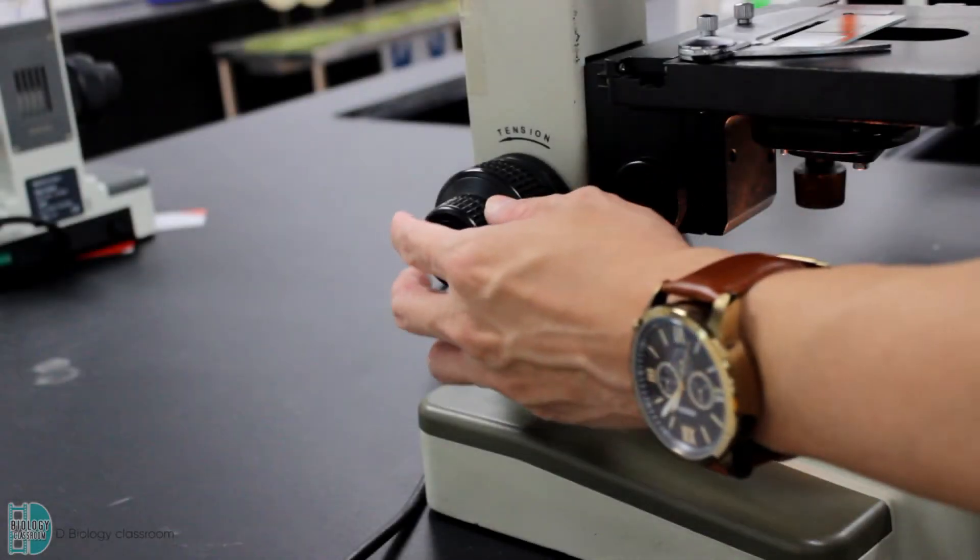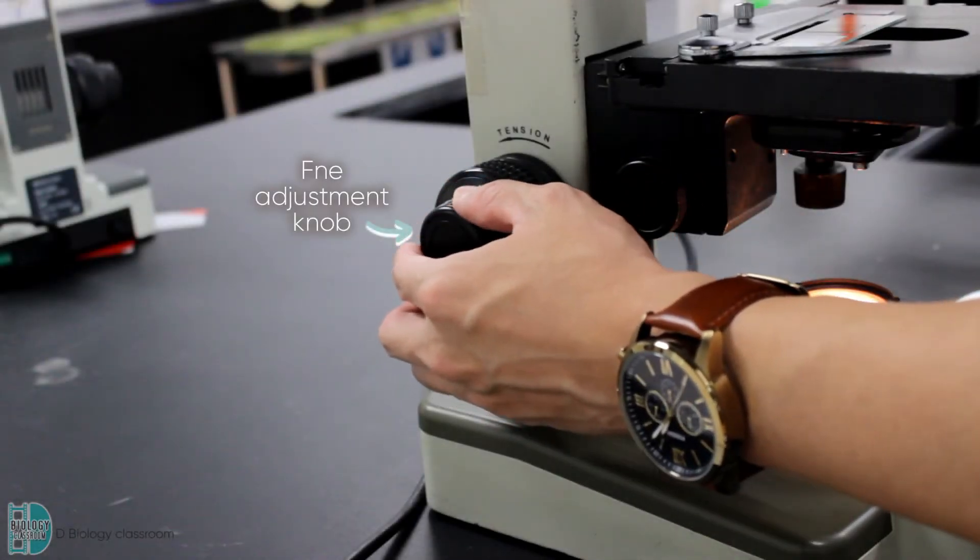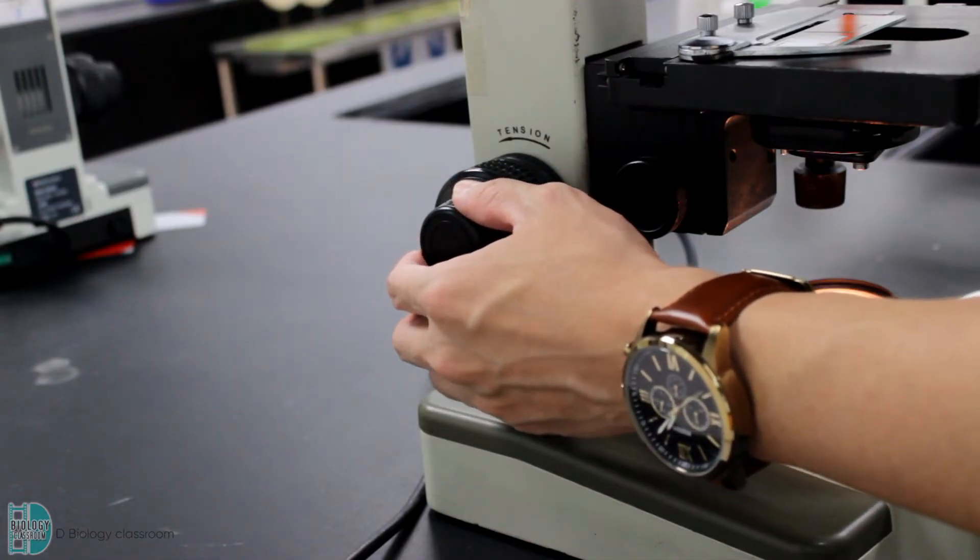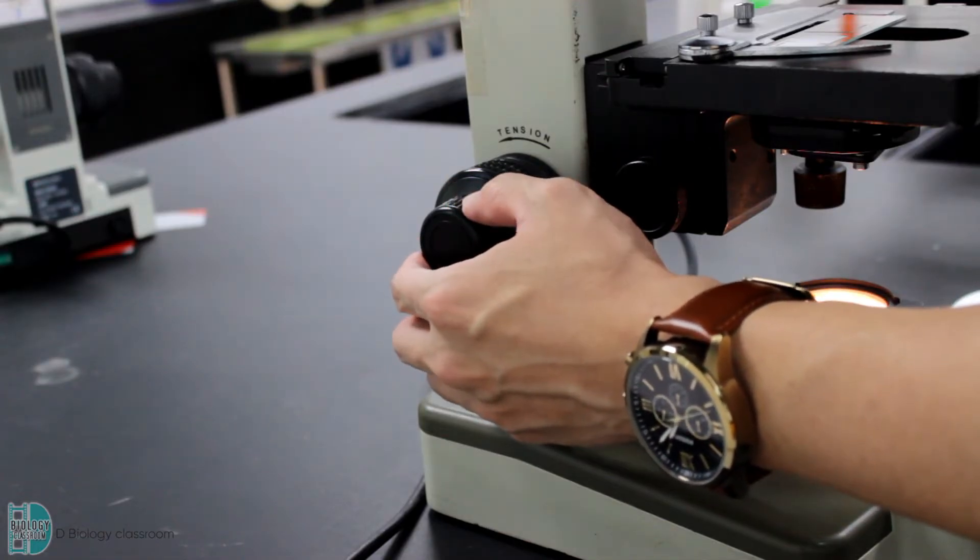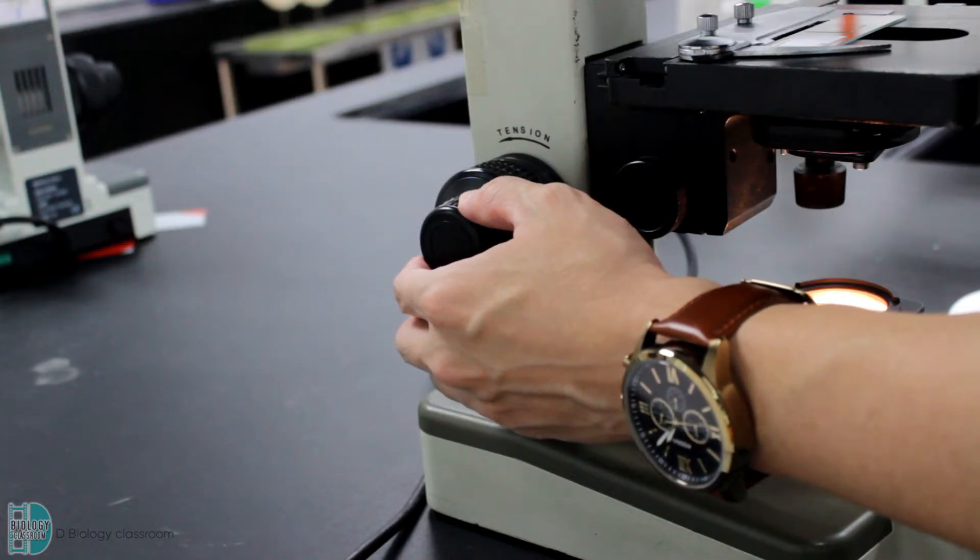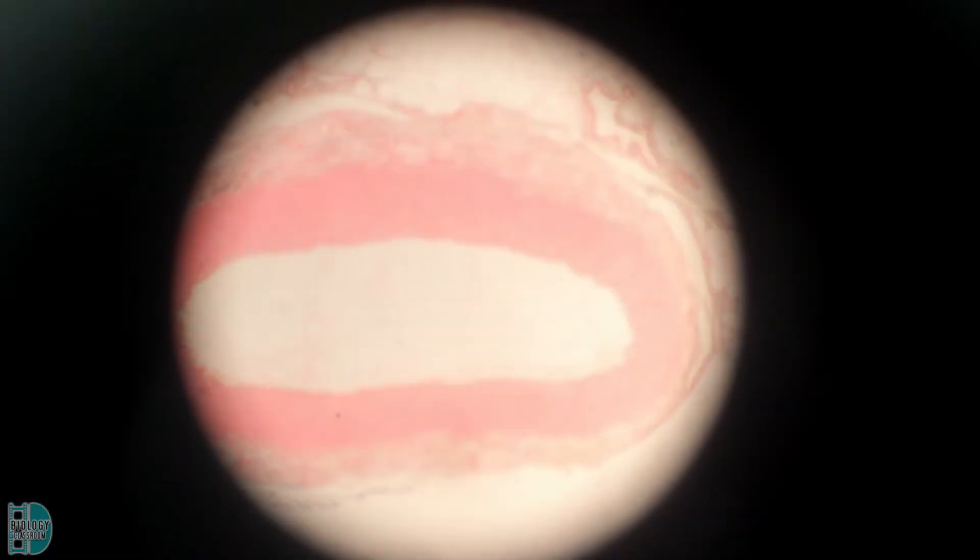It is usual that the image is not very clear at this point. Now, use the fine adjustment knob to fine-tune the stage. The movement is very small and you won't be seeing the stage moving, so don't worry about this. Adjust the knob until the image is sharp and clear.